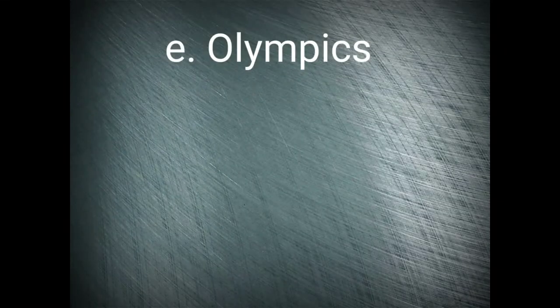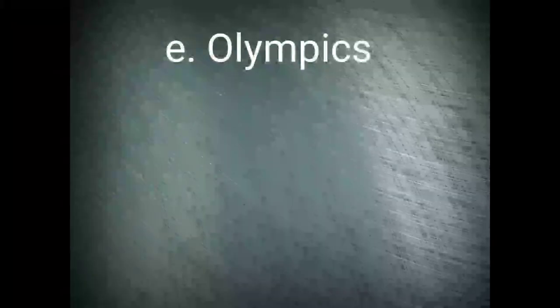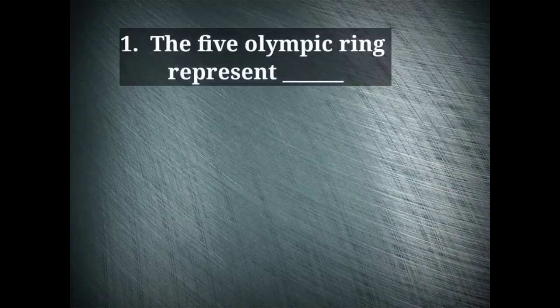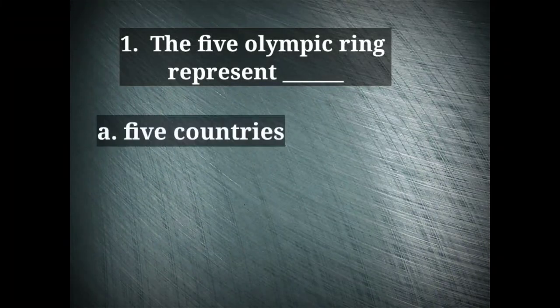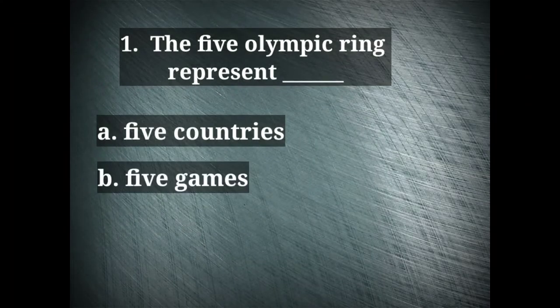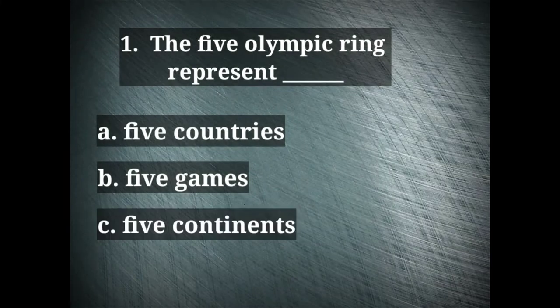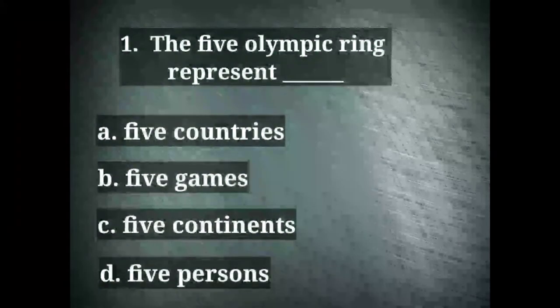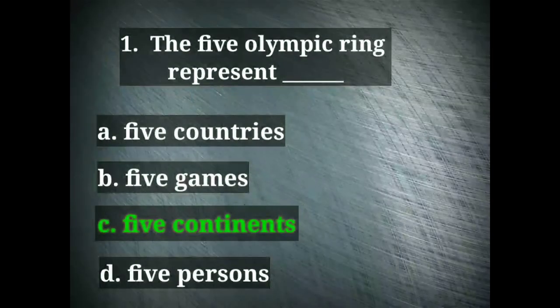The next question here is about Olympics. Here they need to know some questions related to Olympics. The 5 Olympic rings represent — options are 5 countries, 5 games, 5 continents and 5 persons. The right option here is 5 continents.